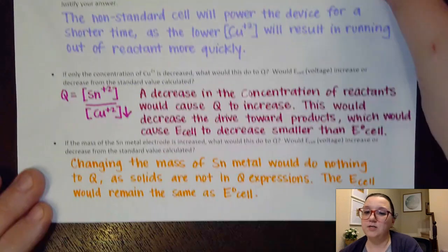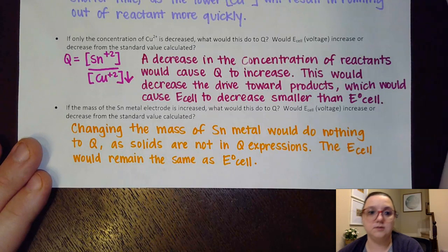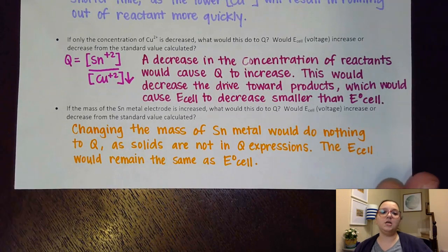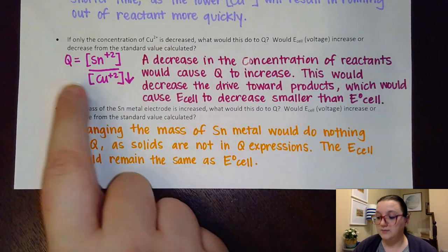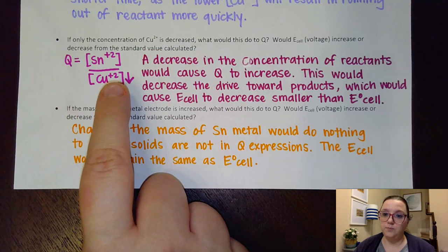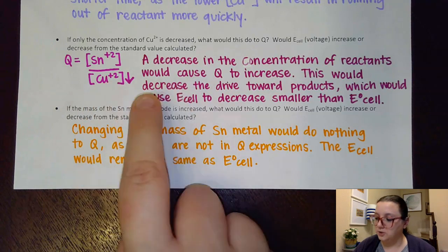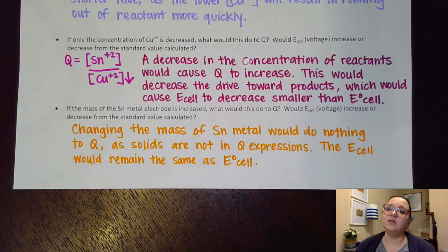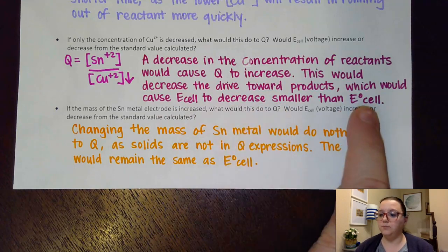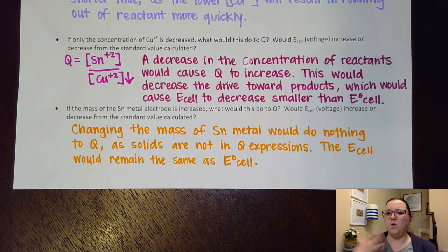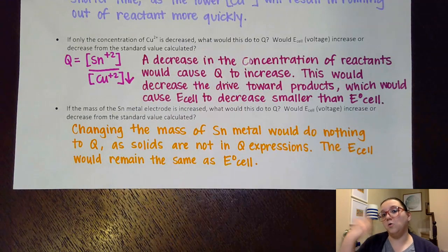If only the concentration of copper ions were changed — say, decreased — that would decrease Q, which would decrease the drive toward products and cause the cell voltage to decrease smaller than the standard cell voltage. It's a little easier to justify when only one concentration changes, compared to the earlier question where we changed both simultaneously and had to think more carefully.